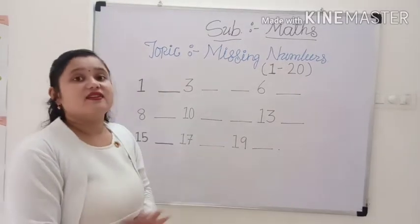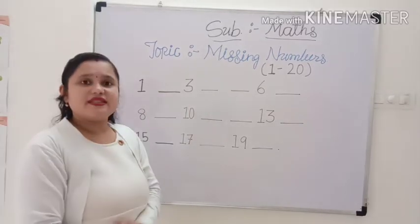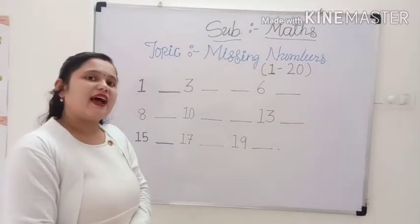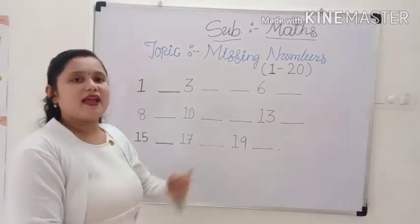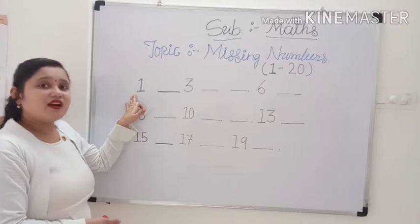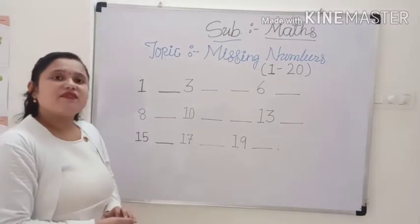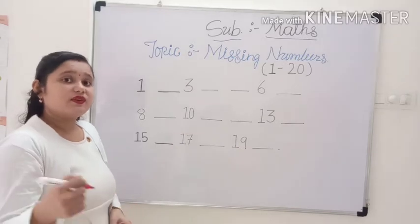Here I have written some numbers, but some numbers are missing. So you can try to fill the blanks. Let's start. This is number 1. Now, which number comes after 1? 2.